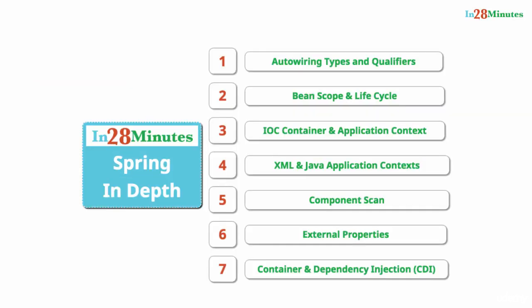Welcome to this section on Spring in Depth. In this section we'll enhance our basic example from the previous section and explore it in multiple ways. We'll try to understand the concepts of auto wiring, bean scope, bean life cycle, and also get a big picture of the IOC container and the application context. We'll understand the different kinds of application context we can create using XML as well as Java, take an in-depth look into component scan and external properties, and at the end look at CDI — Context and Dependency Injection — which aims to standardize dependency injection for Java EE.